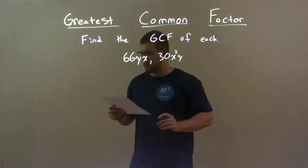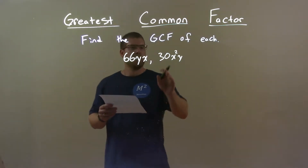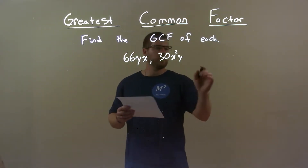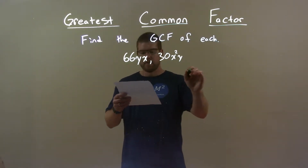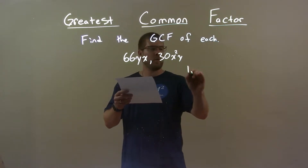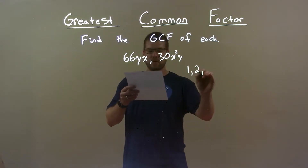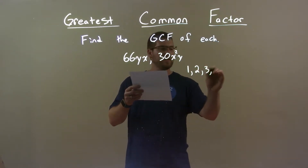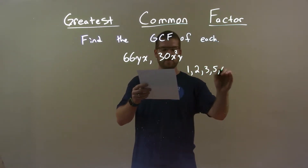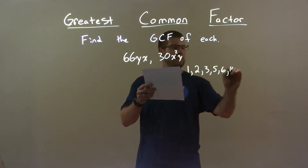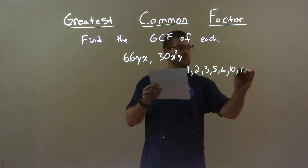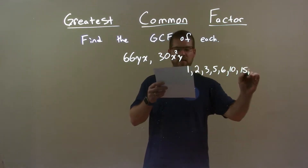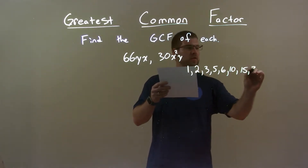Well, first I deal with the numbers. My smallest number is 30, and the factors of 30 are 1, 2, 3, 5, 6, 10, 15, and 30.